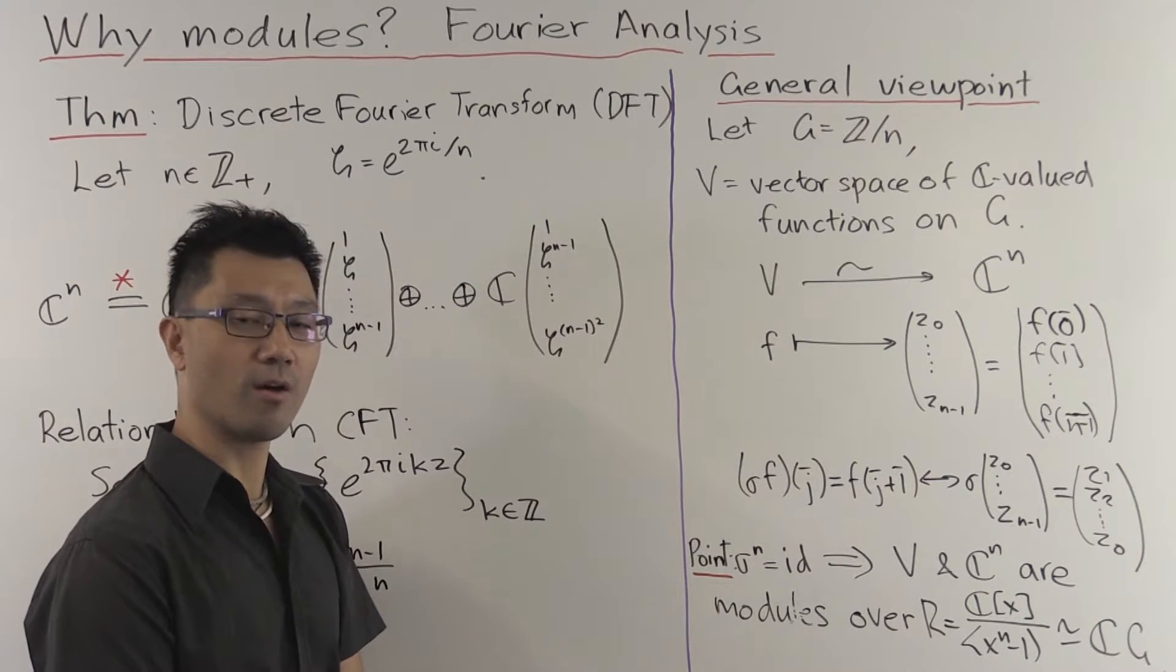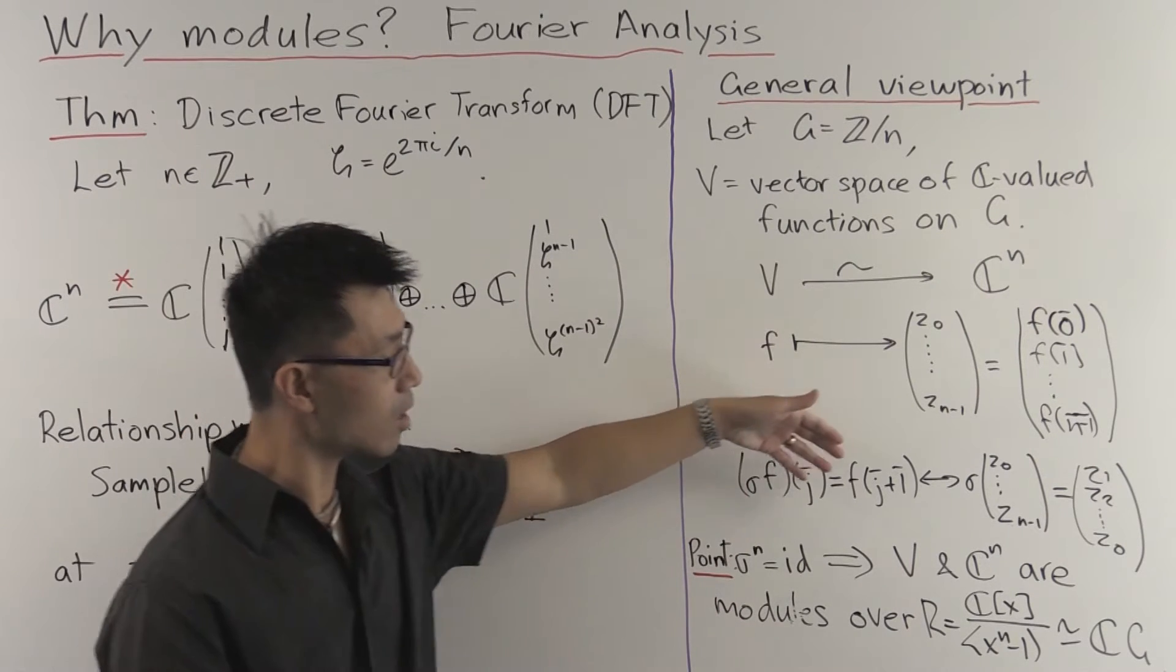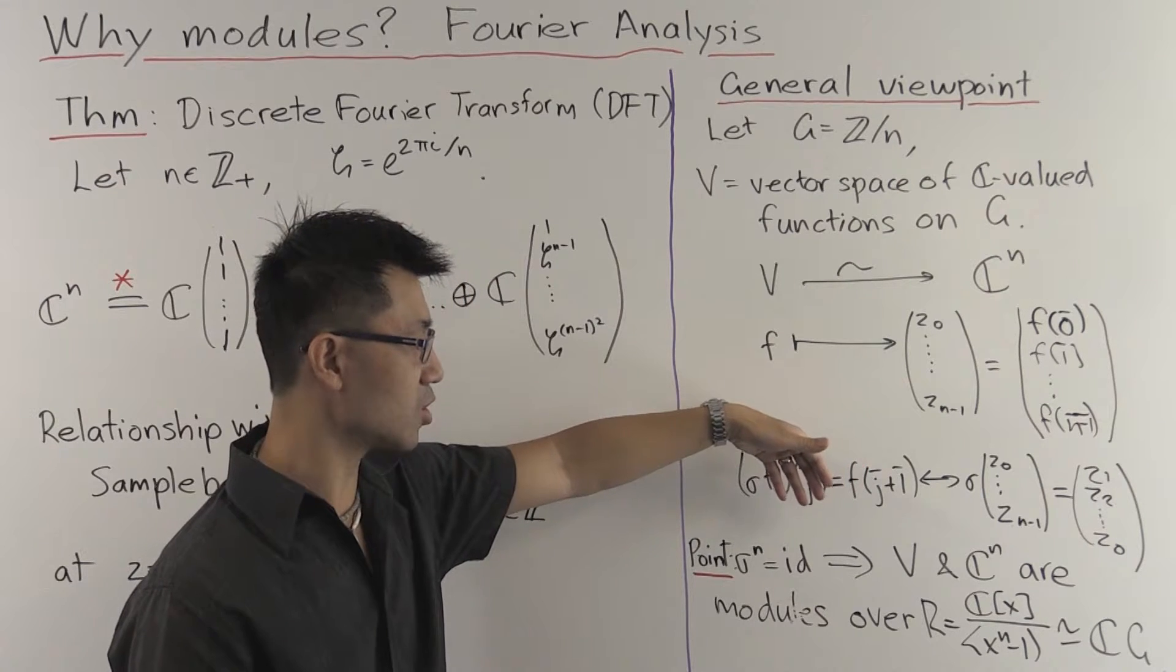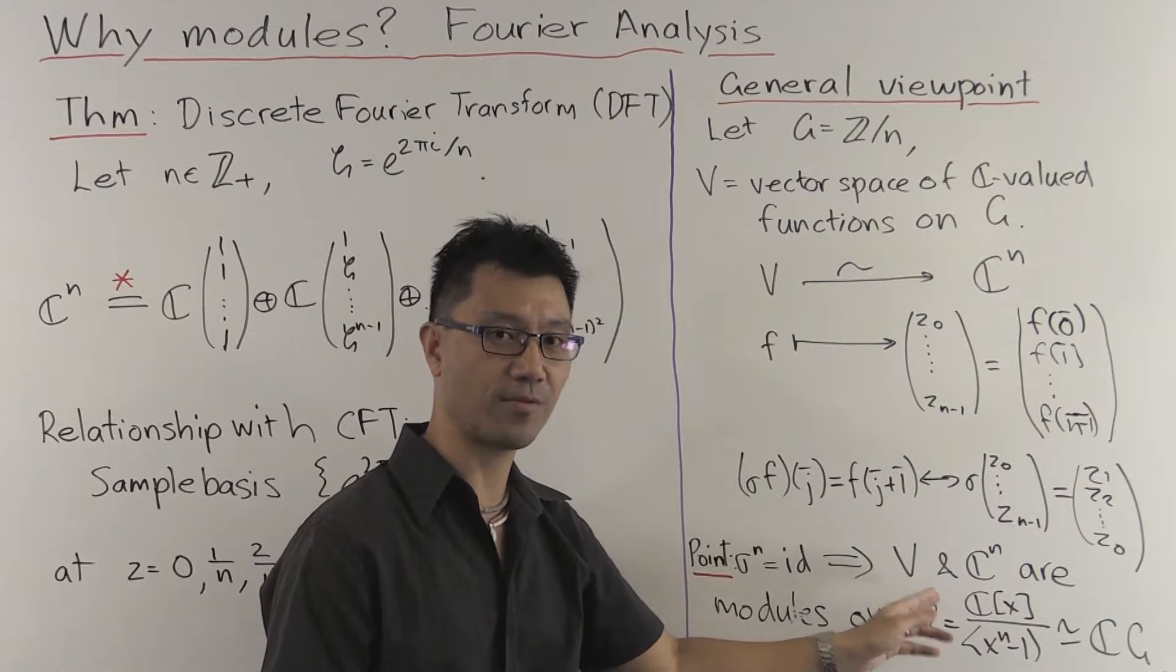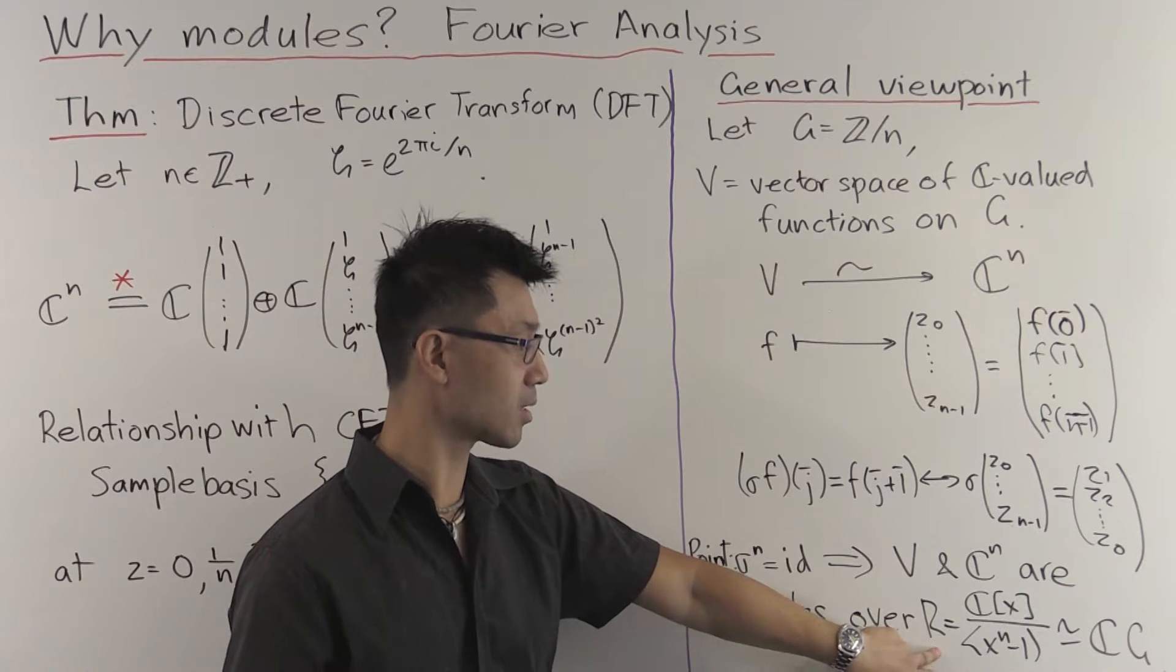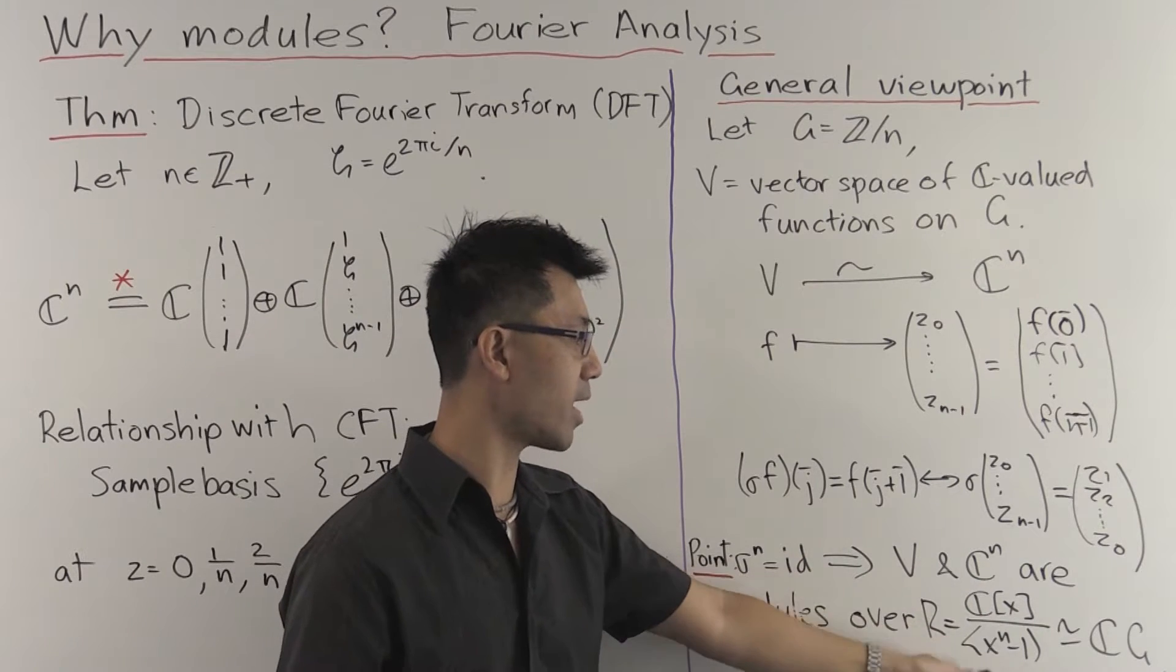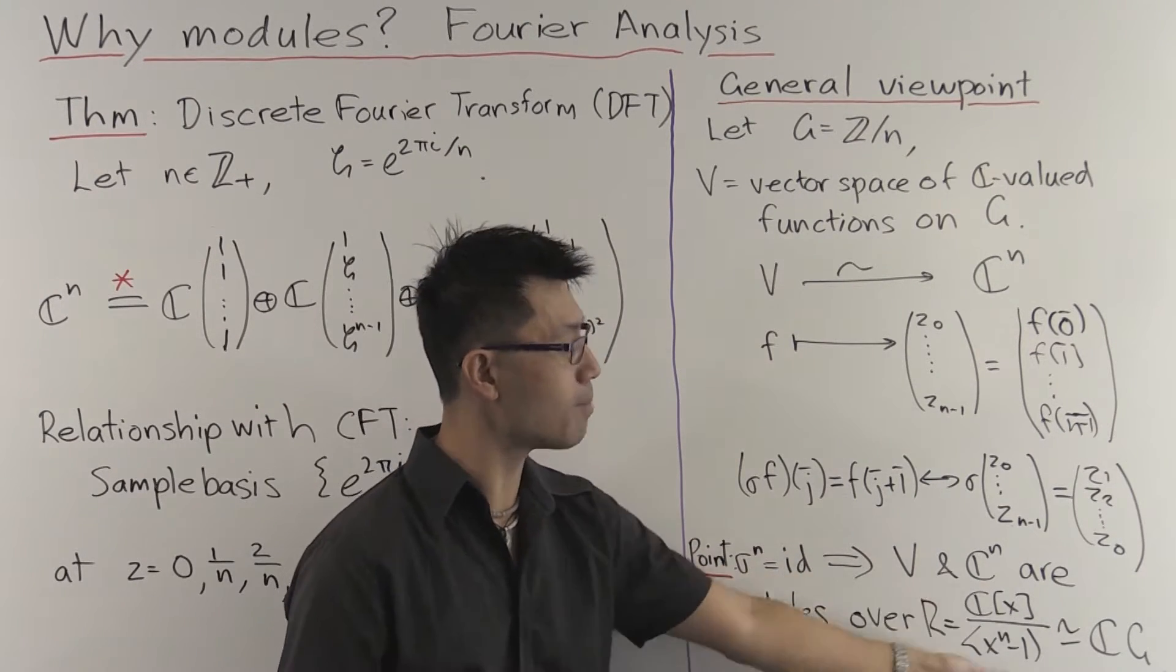And what's another way of describing this symmetry? Well, for example, if you look in terms of my video on matrix equations, you see that that means that this C^n and this vector space V, they're both modules. Modules over what ring? The following ring here: the polynomial ring C[x] modulo (x^n - 1). And where does this equation x^n - 1 come from? It comes from this equation here, the fact that σ^n equals the identity.